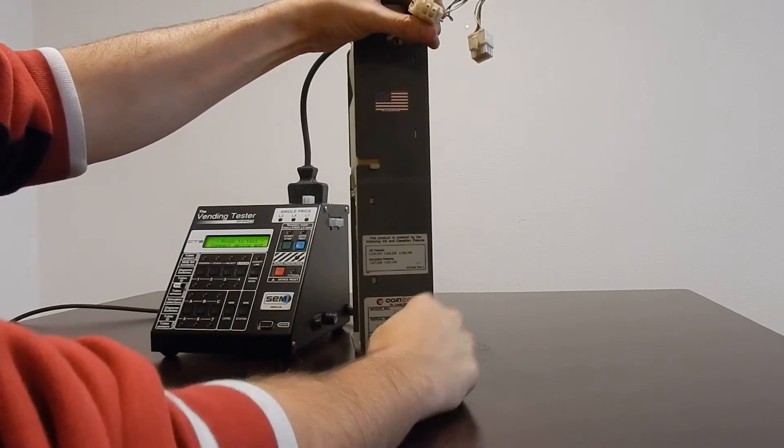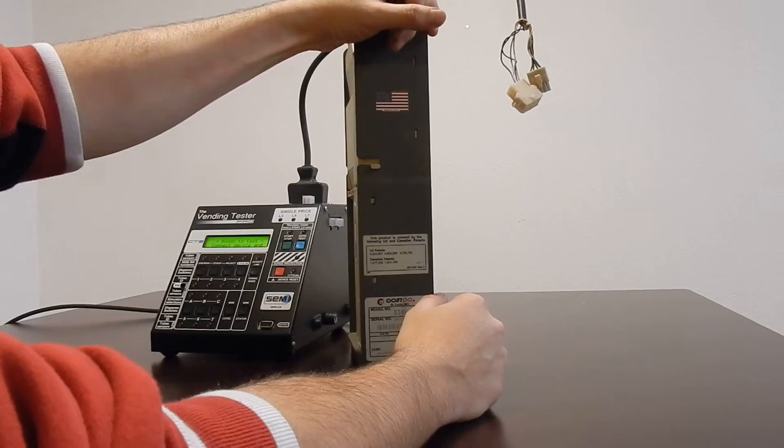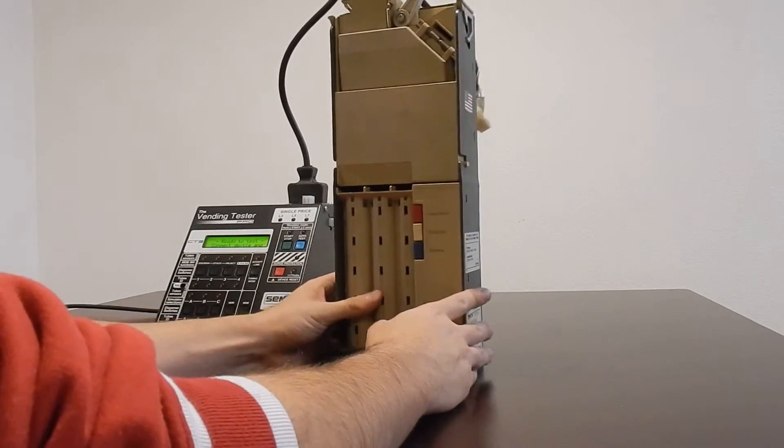The 3340S will only do a CoinCo validator. Some of the others have extra plugs for a cigarette vending machine, which are almost entirely out of operation at this point.